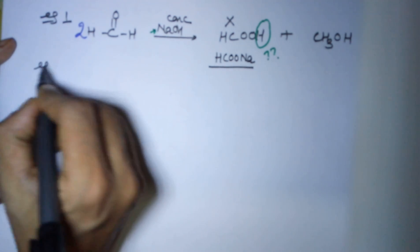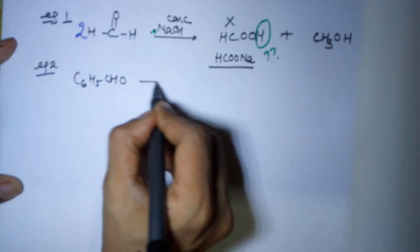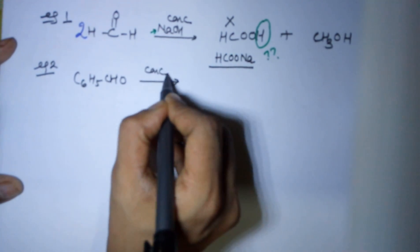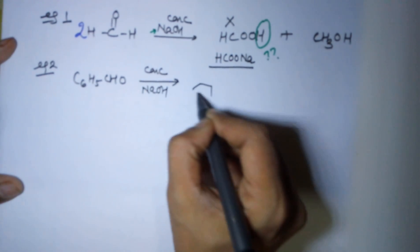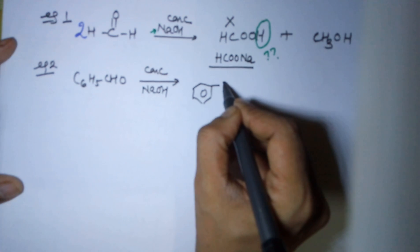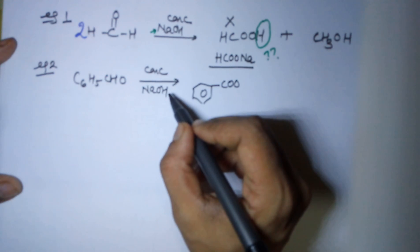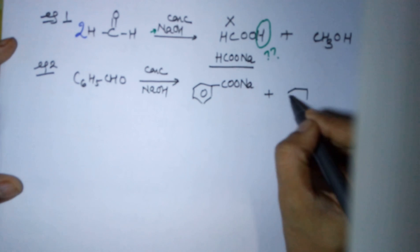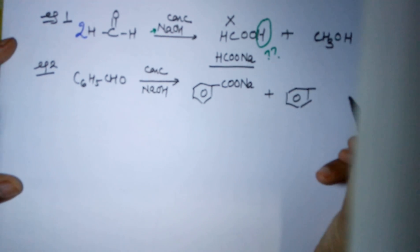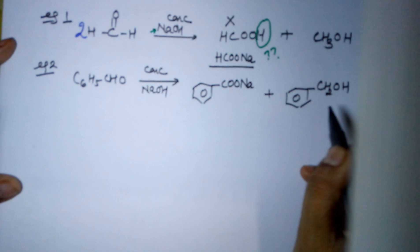Taking example number two which is for benzaldehyde. C6H5CHO is your benzaldehyde. This time I'm taking concentrated NaOH again. This on oxidation would give you C6H5, your benzene ring, and a COONa. Please don't write the H because you're using a strongly alkali medium so it would be a sodium salt, along with the reduced product which will be your benzaldehyde where benzaldehyde on reduction will give you an alcohol like this.